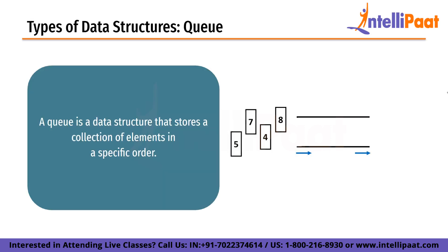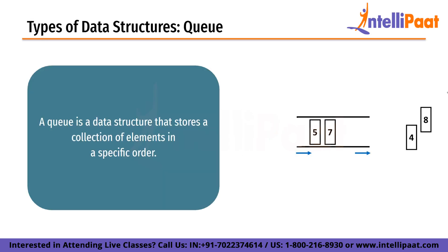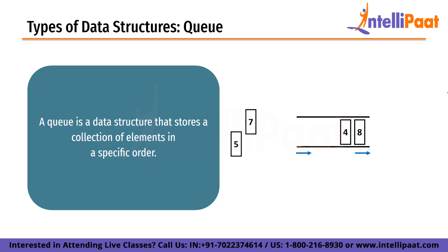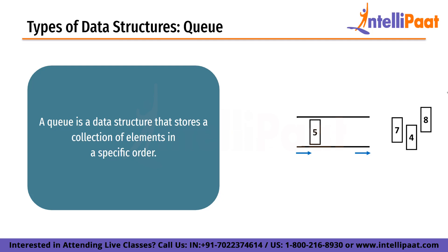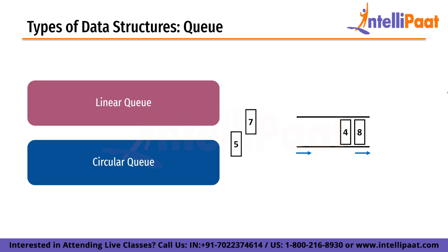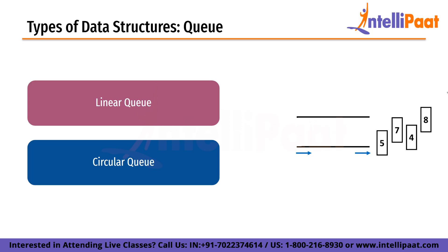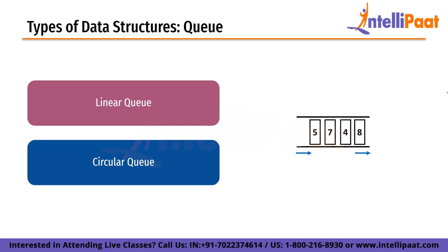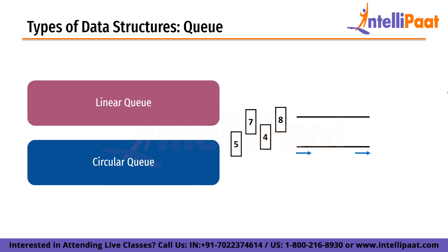Queue is a data structure that stores a collection of elements in a specific order. It follows the first-in-first-out (FIFO) principle, where the first element added to the queue is the first one to be removed. A common analogy is a line of people waiting for a service — the first person to join the line is the first to be served. There are two types of queues: a linear queue that follows FIFO, and a circular queue that uses a circular buffer for efficient memory use and faster execution.